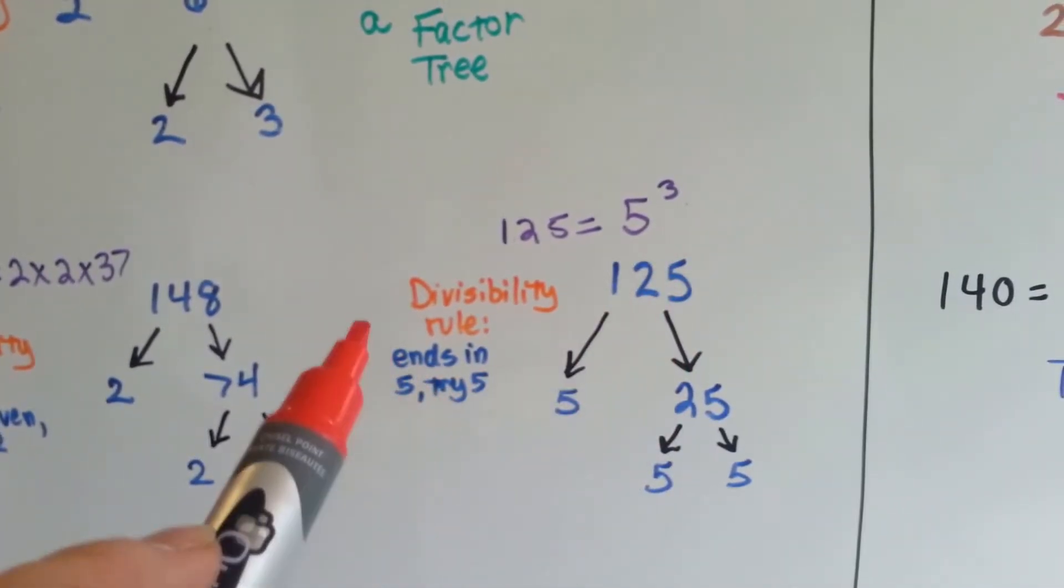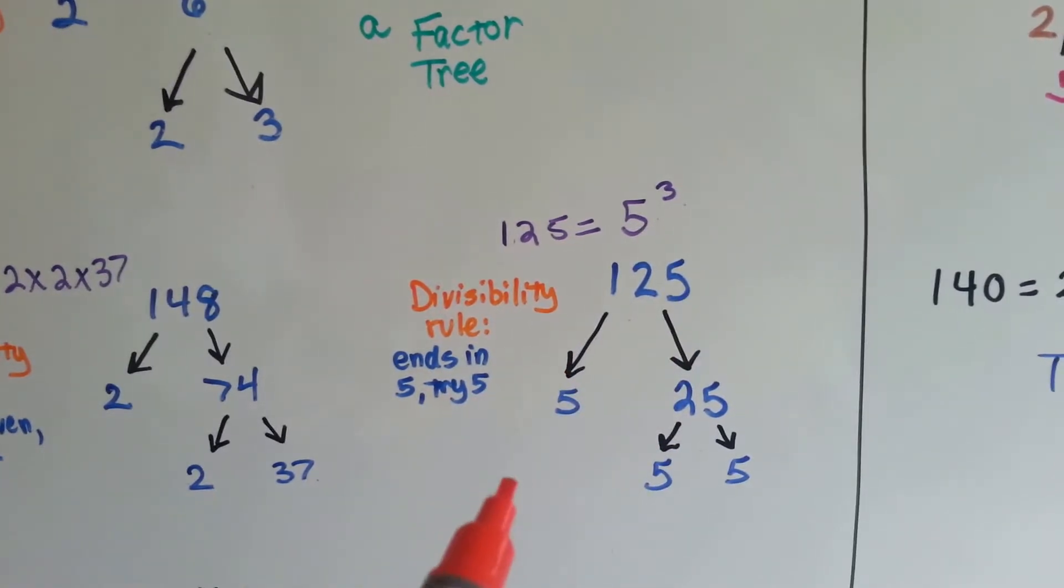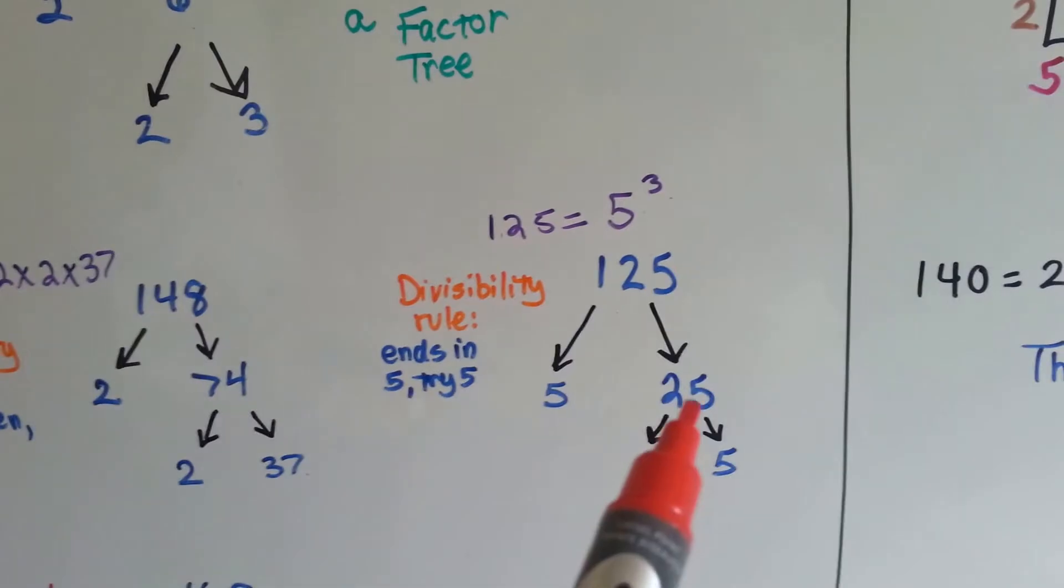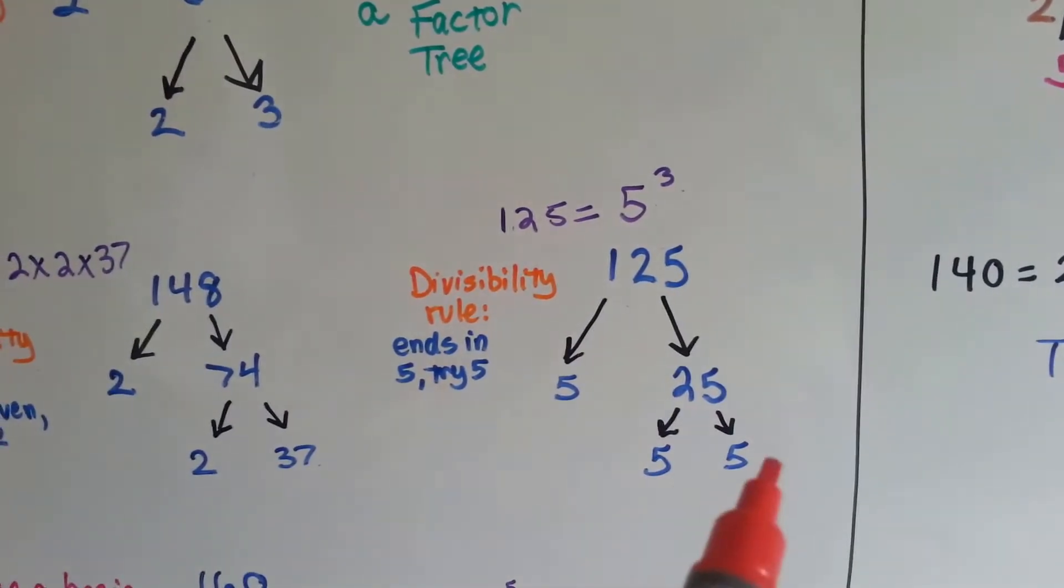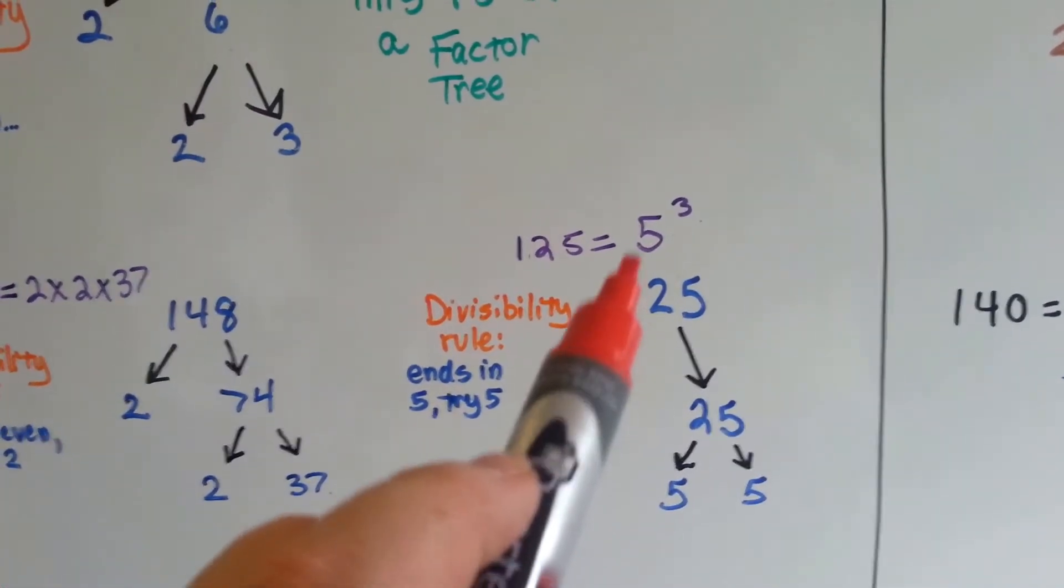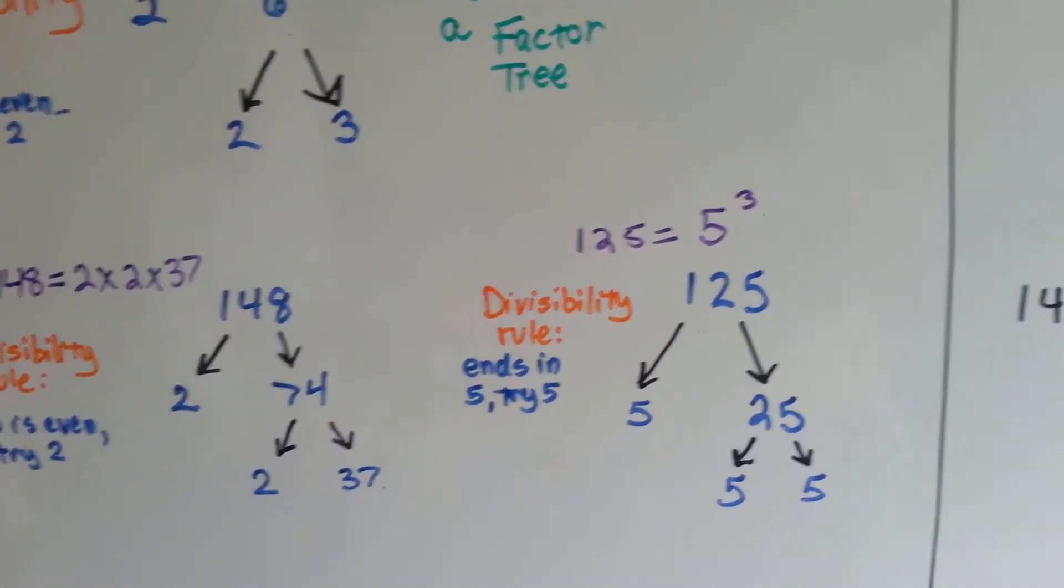Look at 125. The divisibility rule is that it ends in 5, so let's try 5. 5 times what is 125? 5 times 25. So we can break the 25 into factors of 5 times 5. So we have three 5s. So, the prime factorization for 125 is 5 to the third power, or 5 cubed.